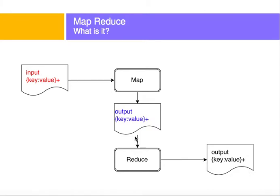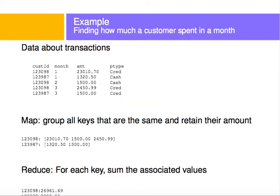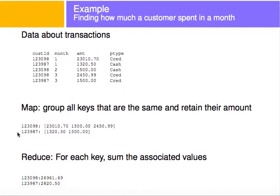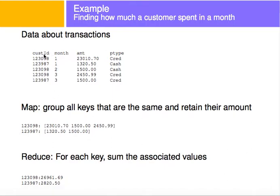So let's illustrate this with an example. Let's say you have a flat file with customer ID, month, amount and payment type for transactions. So you have these customer IDs here, you can see I have two: 123098 and 123987.